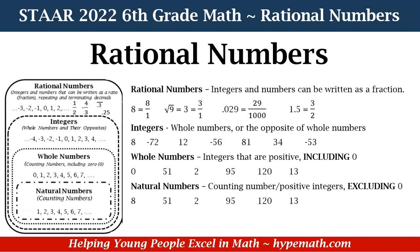Now let's dive in and look at examples of the different types of rational numbers. Rational numbers include integers and numbers that can be written as a fraction. If we have the whole number 8, it can be written as 8 over 1. The square root of 9 equals 3, which can be written as 3 over 1. We have 0.029, which can be written as 29 over 1,000. And 1.5 can be converted to the fraction 3 over 2.